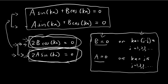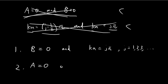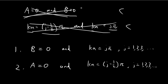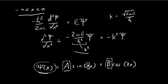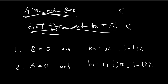The second valid scenario is A = 0 and ka = (j − 1/2)π, where j = 1, 2, 3, and so on. With A = 0, the second requirement 2A·sin(ka) = 0 is satisfied. With ka = (j − 1/2)π, cos(ka) = 0, satisfying the first requirement. Both conditions are met, ψ(x) is continuous, and there are no contradictions. Both of these valid choices will be examined separately.